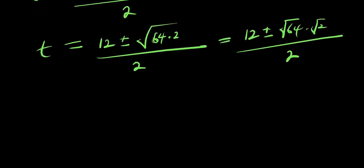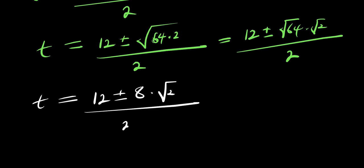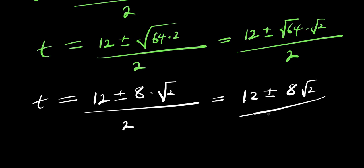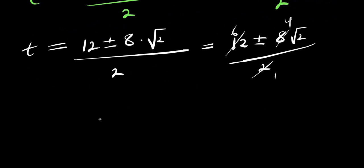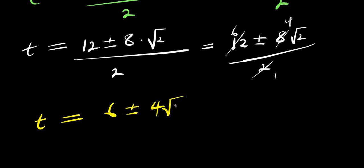So right now, t equals 12 plus or minus square root of 64 times root 2, divided by 2. The square root of 64 is 8, so this is 12 plus or minus 8 root 2, divided by 2. Dividing through by 2: 12 divided by 2 is 6, and 8 divided by 2 is 4. So t equals 6 plus or minus 4 root 2.